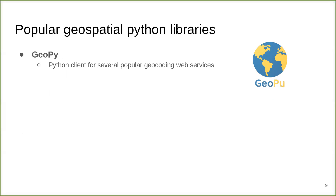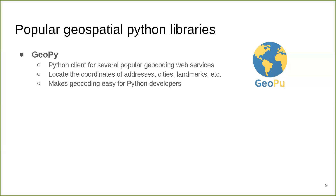GeoPy is a geocoding client for several popular geocoding web services, such as OpenStreetMap's Nominatim, Google Maps, and Bing Maps. Geocoding is the process of converting addresses, cities, and place names into geographic coordinates with latitude and longitude coordinate pairs. GeoPy makes geocoding easy for Python developers.